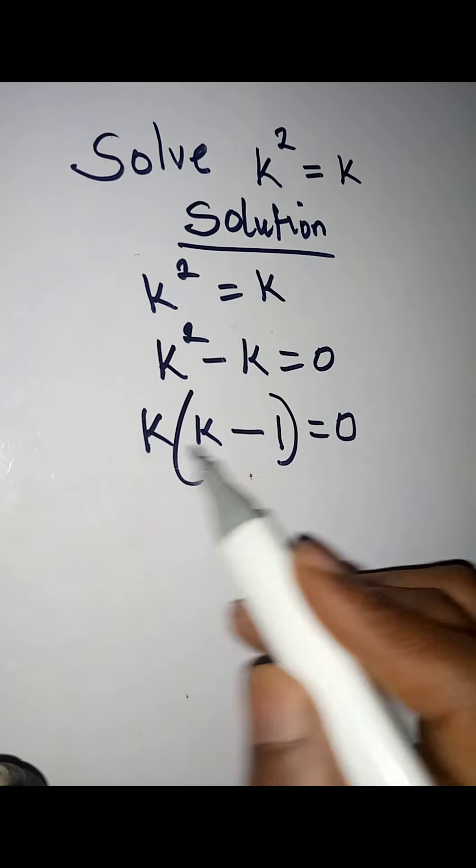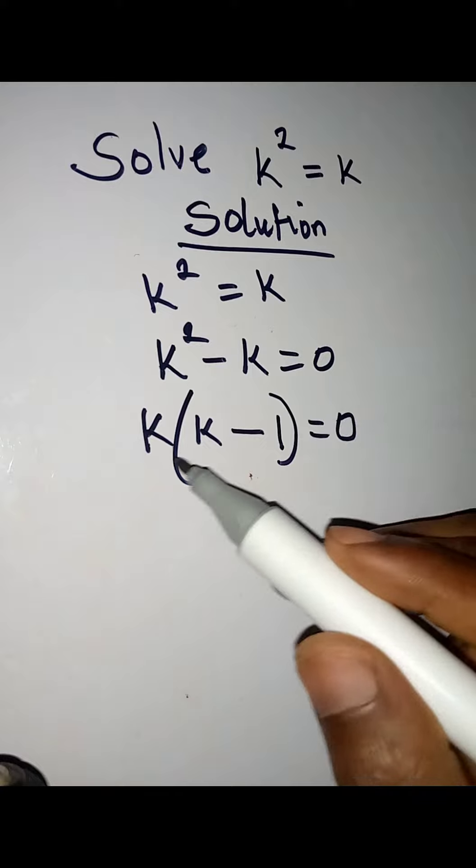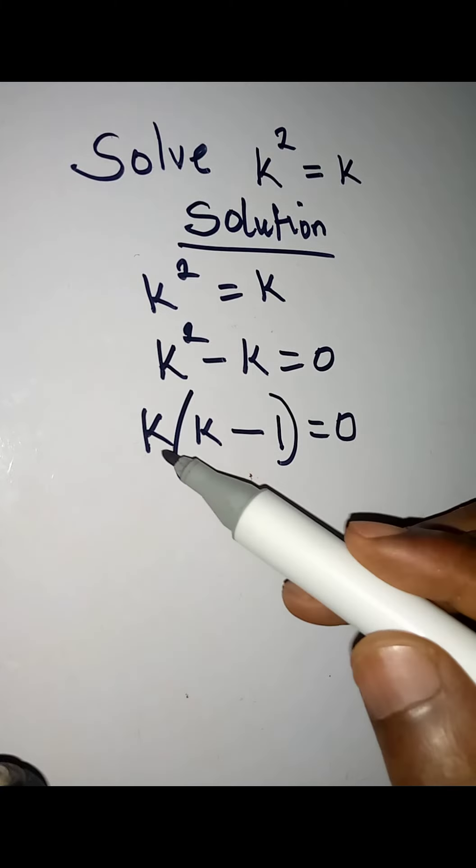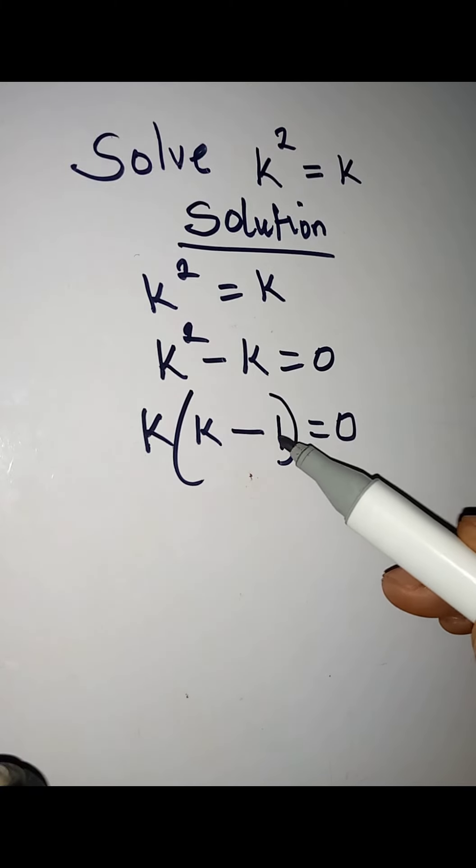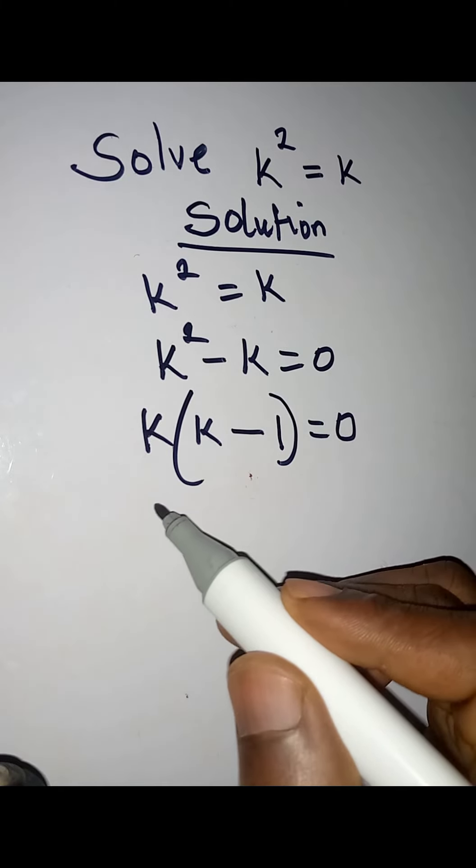Open the bracket and it will give you this back: k times k is k², k times minus 1 is minus k. So that means we are still in line.